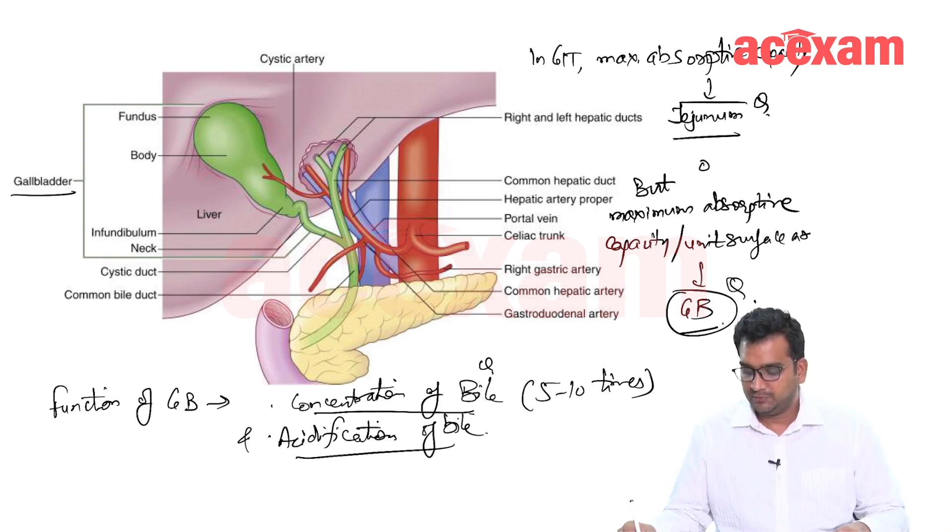So this is a few questions regarding gallbladder. You can see here this is gallbladder. The right hepatic artery gives the cystic artery. Cystic artery is a branch of right hepatic artery.